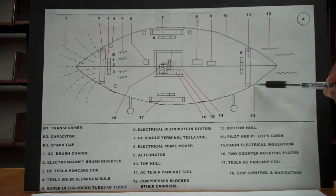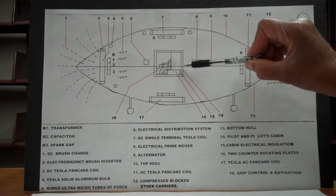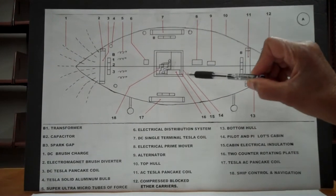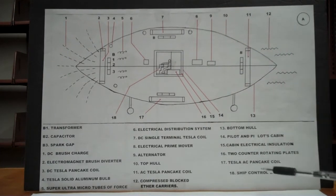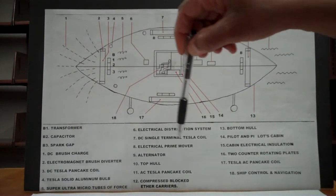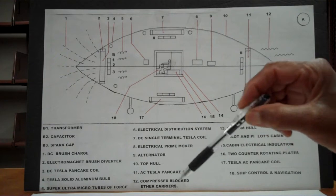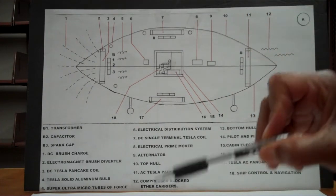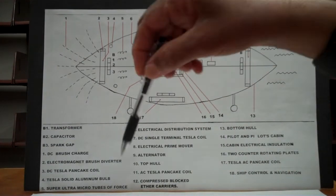Number thirteen is the bottom hull — number ten is the top hull, number thirteen is the bottom hull. Number fourteen is the cabin and the pilot inside the cabin. Number fifteen is the electrical insulation — the whole cabin is insulated. Number sixteen is a counter-rotating plate, because a flying saucer precesses — it spins around and around. A counter-rotating plate is put inside the ship to equalize the forces so the whole flying saucer doesn't spin. A magnetic field makes an electromagnetic field spin, which is why the saucer turns around.